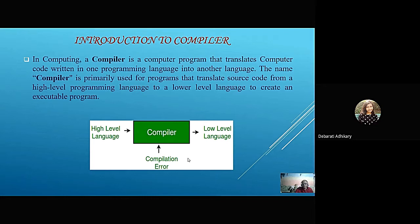First, we have to know: In computing, a compiler is a computer program that translates computer code written in one programming language, the source language, into another language, the target language. The name compiler is primarily used for programs that translate source code from a high-level programming language to a low-level language—assembly language, object code, or machine code—to create an executable program.